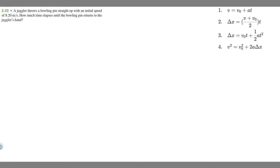In this problem, we're told a juggler throws a bowling pin straight up with an initial speed of 8.2 meters per second. How much time elapses until the bowling pin returns to the juggler's hand?